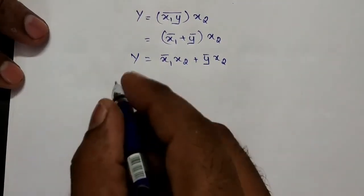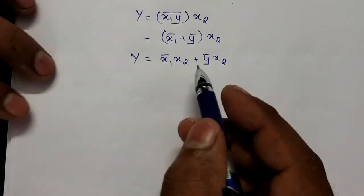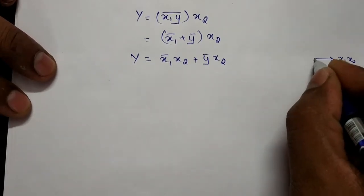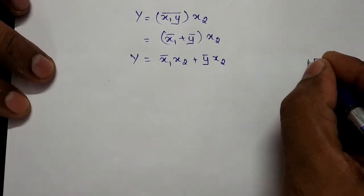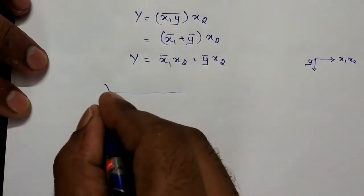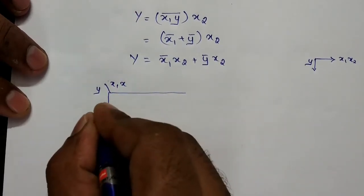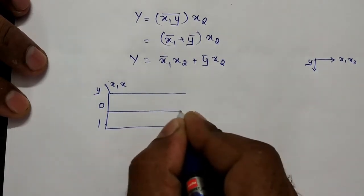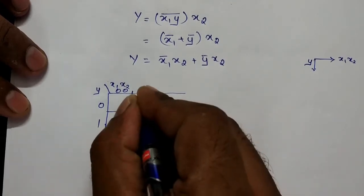We have two inputs x1 and x2, so they go on the horizontal axis. There is only one excitation y, so it goes on the vertical axis. The input possibilities are 00, 01, 10, and 11.